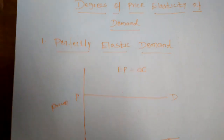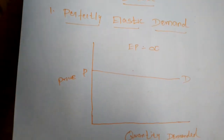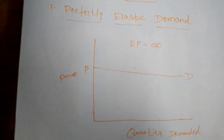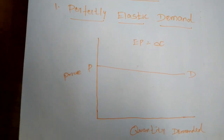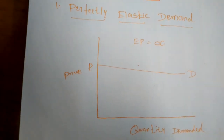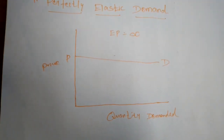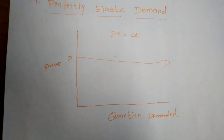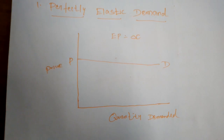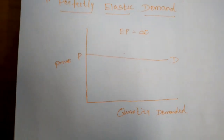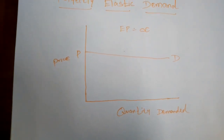Next we study the elasticity of demand. The law of demand explains the direction of change in demand due to a change in price, but it fails to explain the rate of change in demand due to a given change in price. The elasticity of demand explains the rate of change in quantity demanded due to a given change in price.